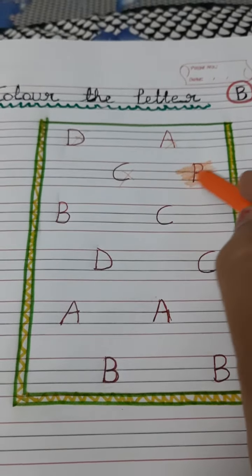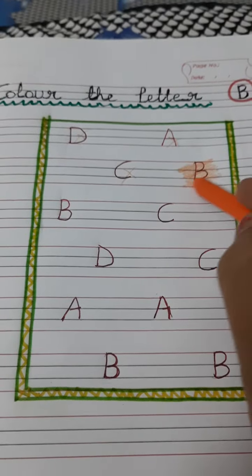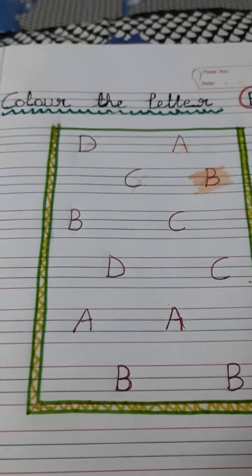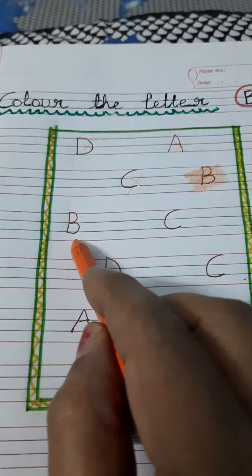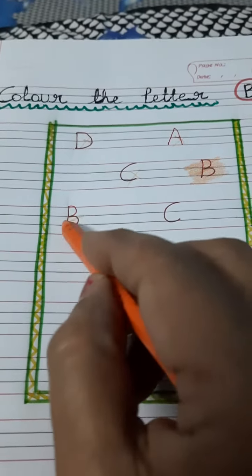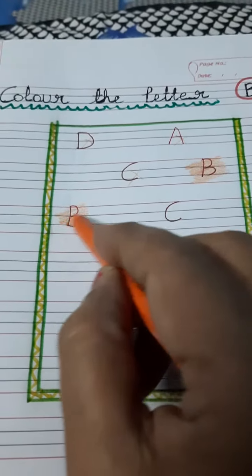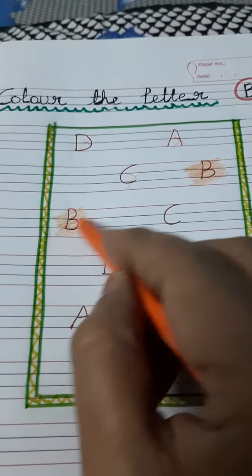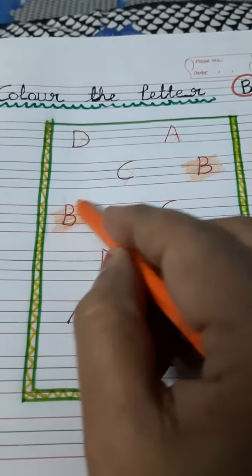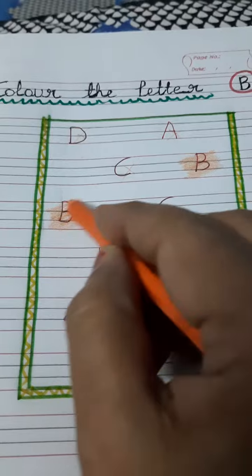Capital letter B. Capital letter B. We also find the next letter capital B. We will color this letter. We have to color this letter B.